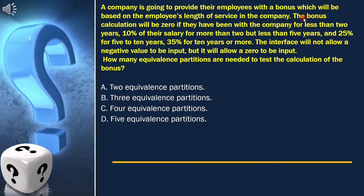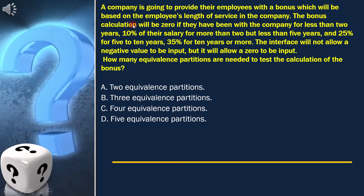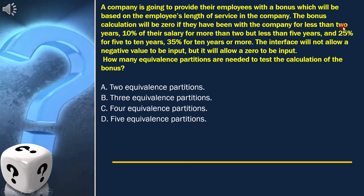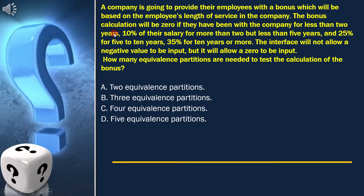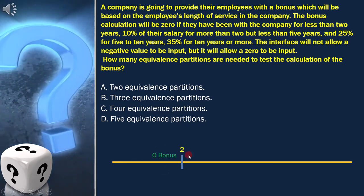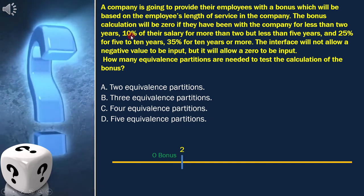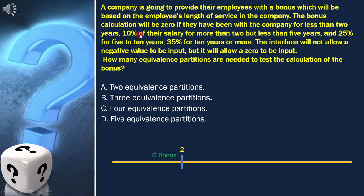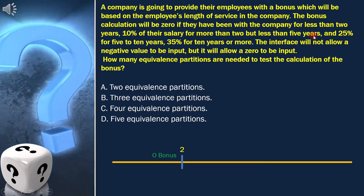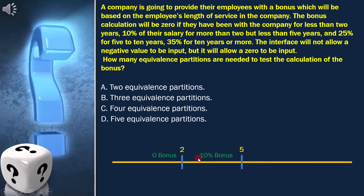As per the question, the first condition is: the bonus calculation will be zero if they have been with the company for less than two years. That means two years is one of the boundaries. The second condition is 10% of their salary for more than two but less than five years. That means five years is the second boundary.